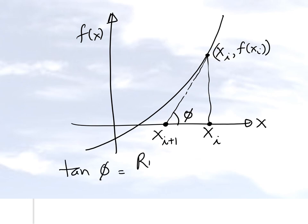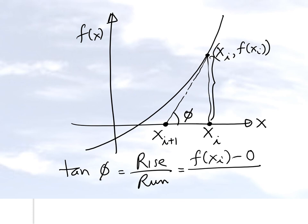The tangent of phi is rise over run. The rise is f(x_i) minus zero, because the y-value at x_i is f(x_i) and the y-value at x_{i+1} is zero. We divide by the run, which is x_i minus x_{i+1}. Students sometimes get confused about the order, but since the function value is at x_i, you put x_i in the numerator — that makes perfect sense.